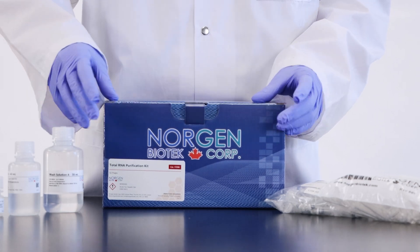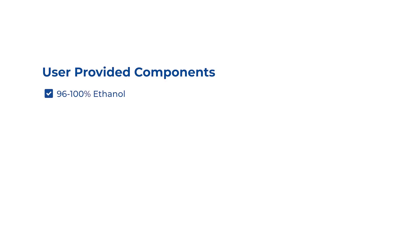And you as the user will need to provide 96-100% ethanol and RNase-free microcentrifuge tubes for processing all acceptable sample types, 70% ethanol, mortar and pestle, and liquid nitrogen for processing animal tissue.